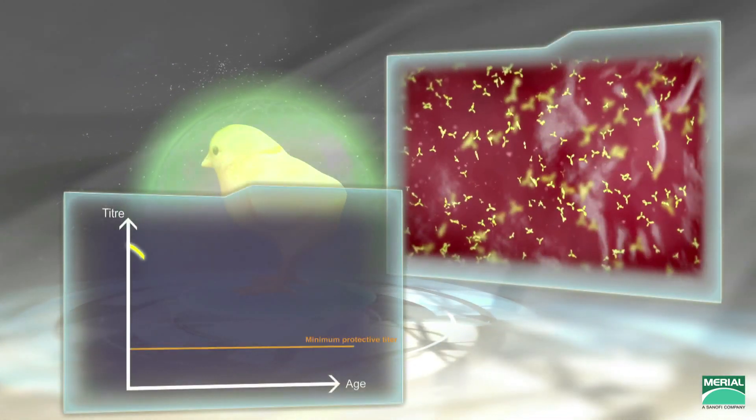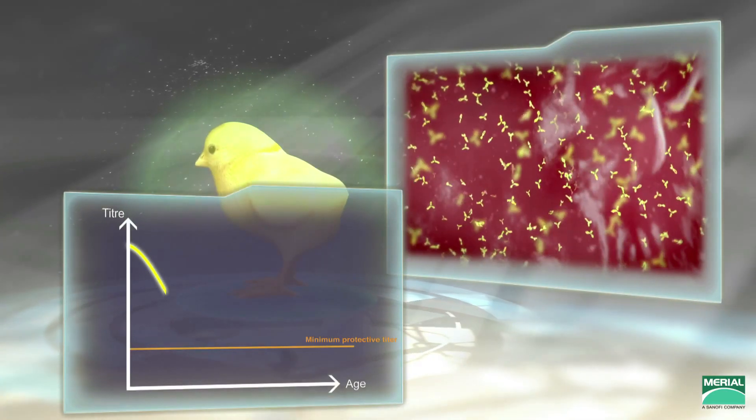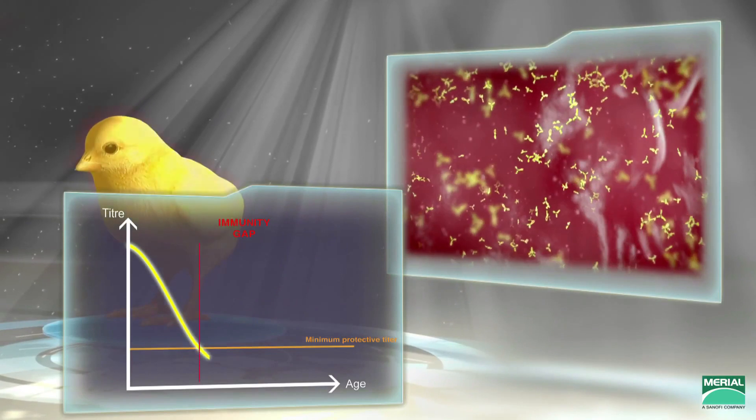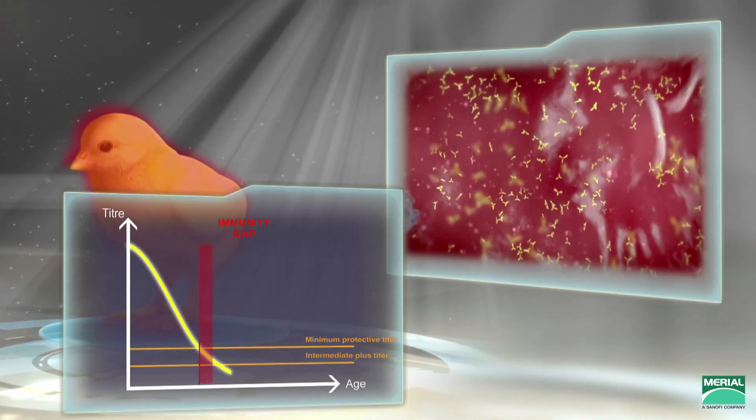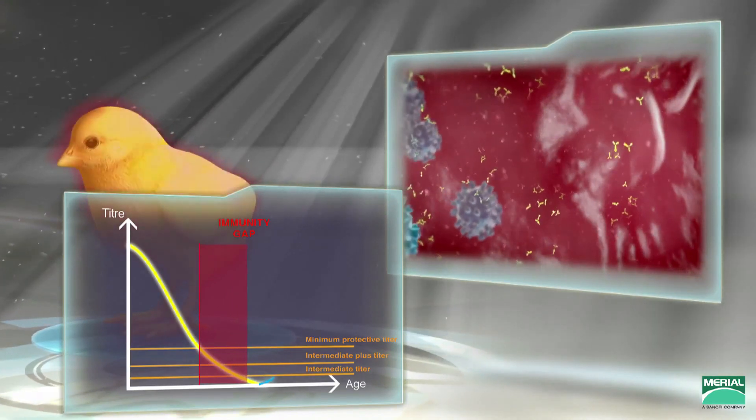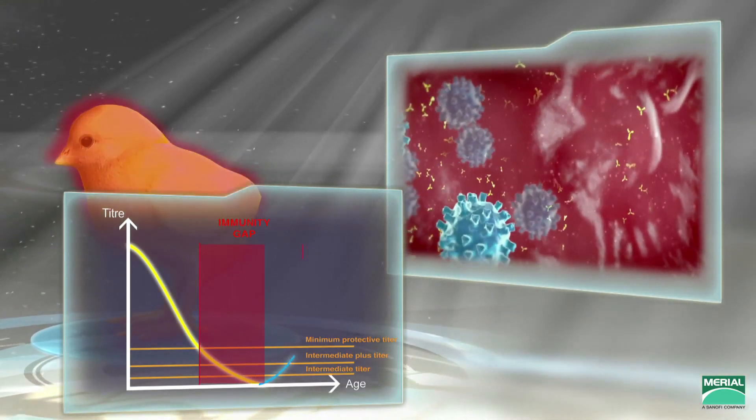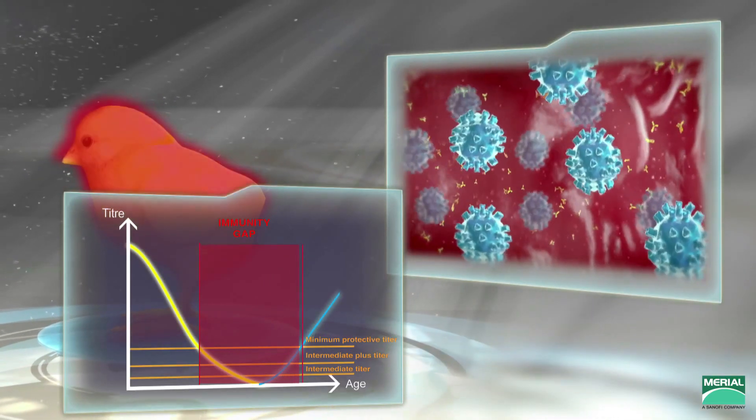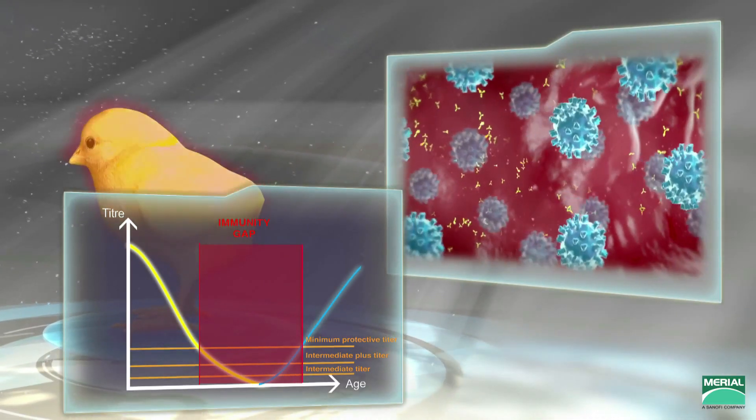IBD vaccines have to be administered when the level of maternal antibodies allows their replication, which is below the protective threshold and higher for the intermediate plus than for the intermediate IBD vaccine. If the timing is right, the virus goes directly to the Bursa, where it replicates before inducing an immune response.